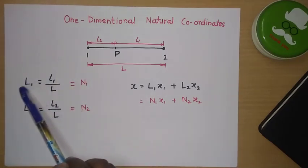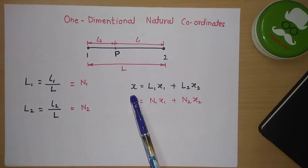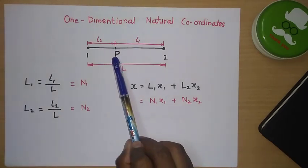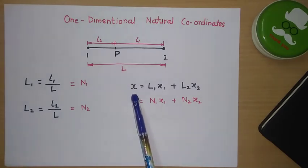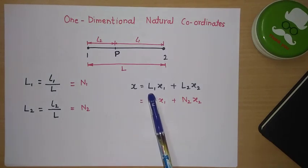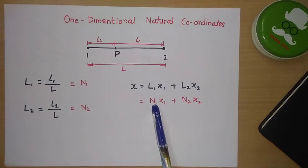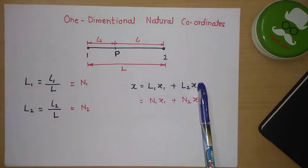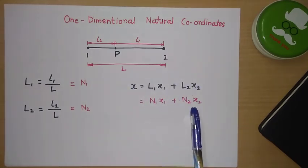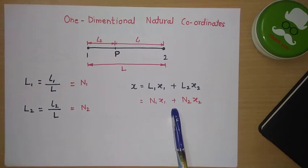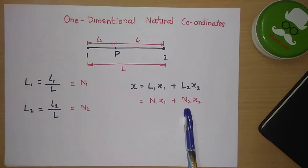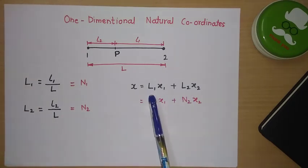If we find the coordinate of point P, x can be found using the formula L1·x1 plus L2·x2. This equation relates to the shape function equation N1·x1 plus N2·x2, where N1 and N2 are the shape functions, and L1 and L2 are the natural coordinates of the one dimensional element.